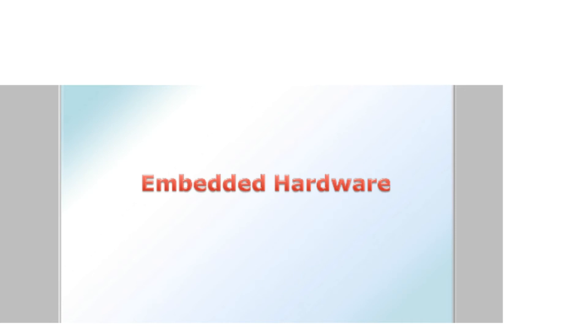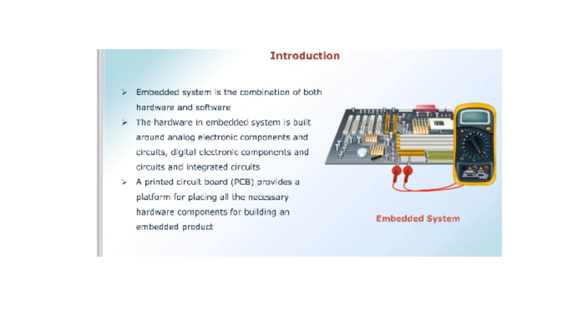Embedded hardware means an arrangement according to a set of rules. The embedded devices include transistors, resistors, capacitors, inductors, relays, and switches — these are all embedded hardware components. Embedded is the combination of both hardware and software and is mainly designed to perform a particular task within the specified time.